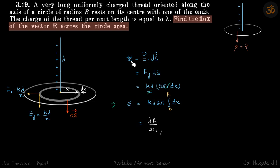The flux passing through this ring is E dot ds, or Ey into ds. For the Ex component, Ex dot ds will be zero, so we are only left with Ey dot ds, which is Ey into ds.